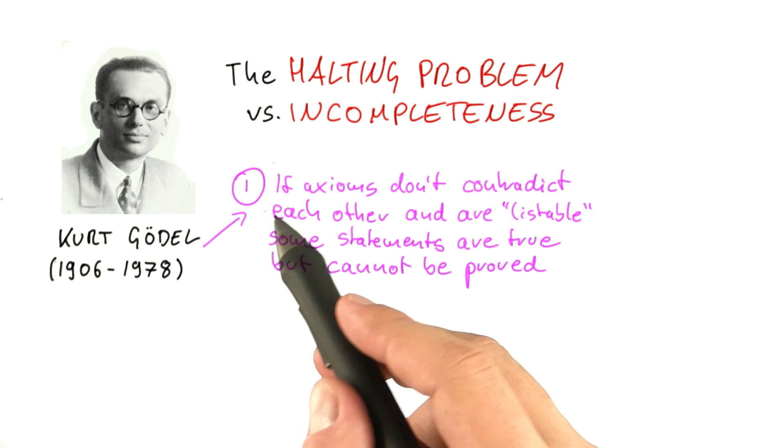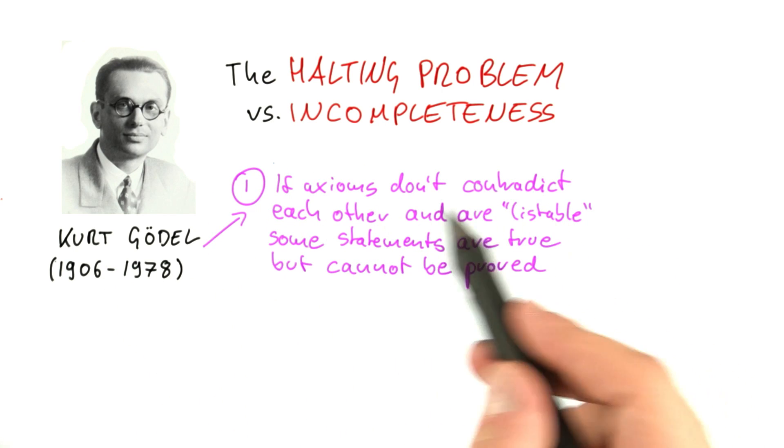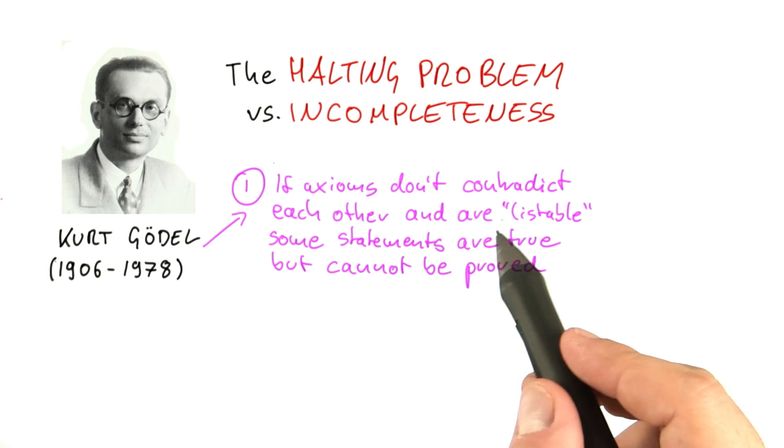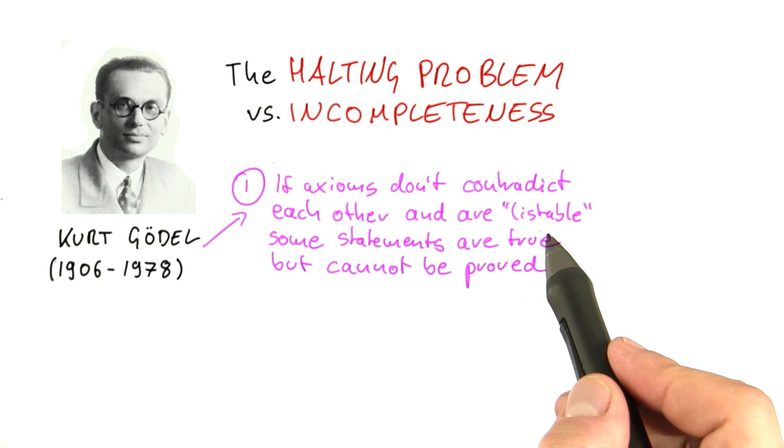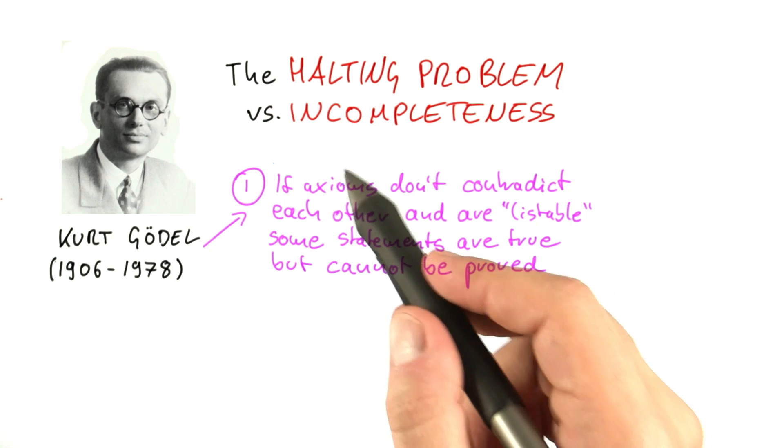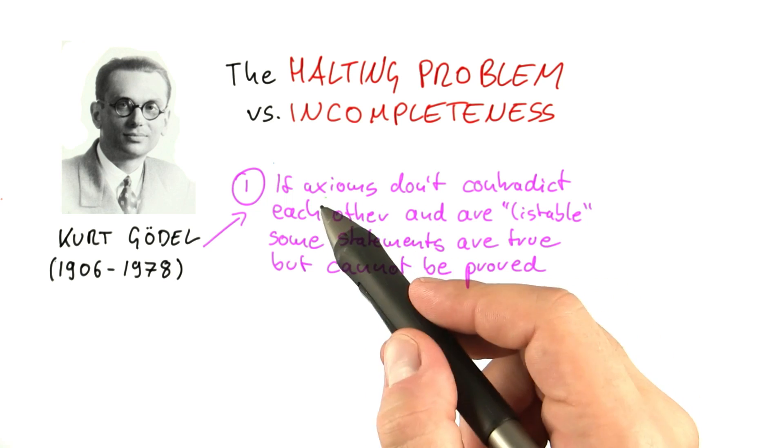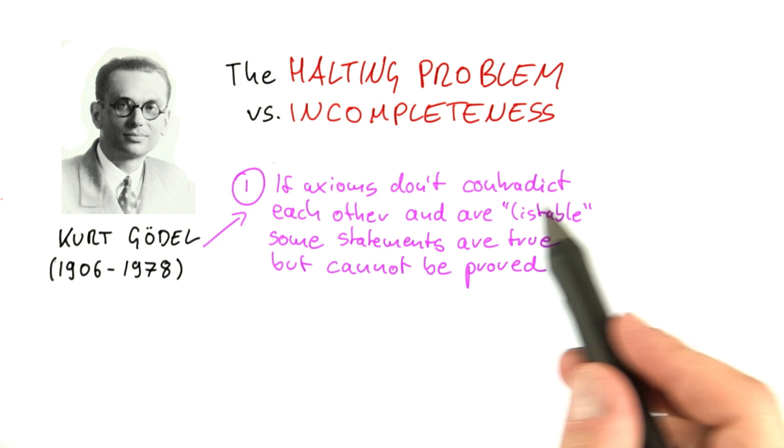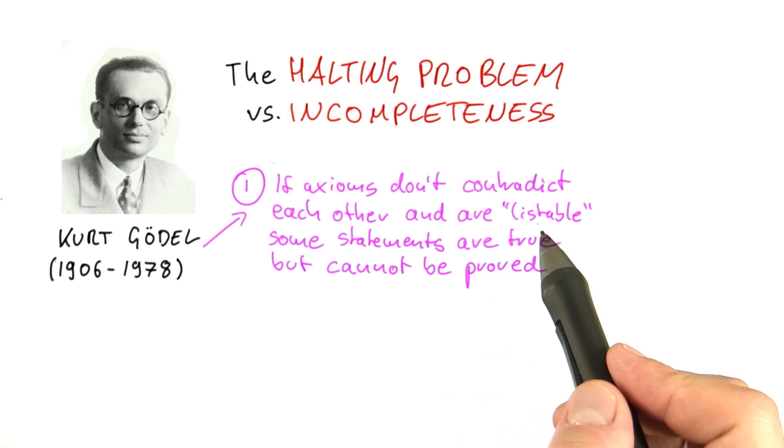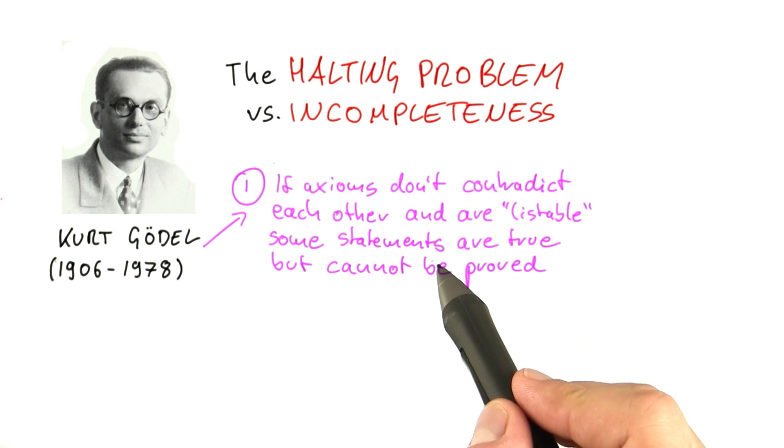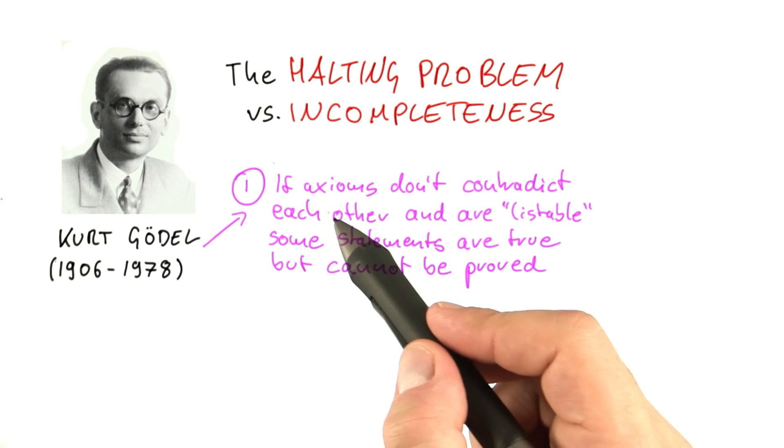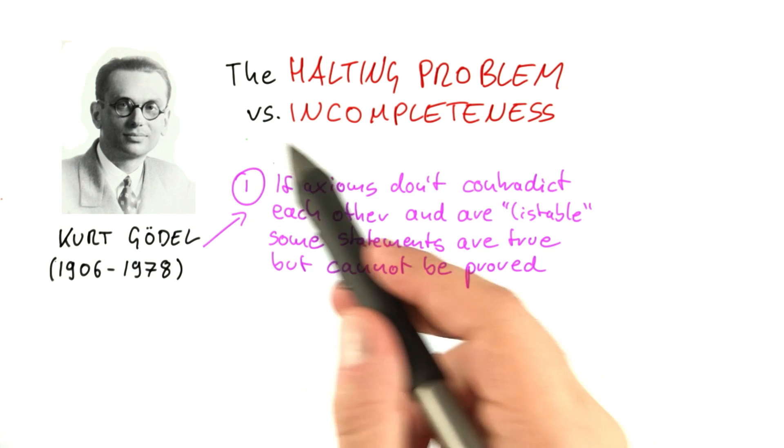What Kurt Gödel showed was that if you have a set of axioms and they don't contradict each other, and they are listable, which means you could have an algorithm that lists all of these axioms—either finite or infinite as long as you have an algorithm that can produce them all—then there are some statements that are true but which you cannot prove based on these axioms. And this is what he meant by incompleteness.